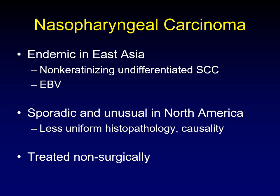Now let's turn our attention to nasopharyngeal carcinoma itself. There are two forms. The more common is the endemic form, endemic in East Asia — a non-keratinizing undifferentiated form of squamous cell carcinoma in which Epstein-Barr virus is a causative agent. The other form is seen sporadically and rarely in North America; it does not have uniform histopathology or uniform causality like the endemic form. All forms together are treated the same way: non-surgically with chemoradiation. Radiation is the mainstay of treatment.